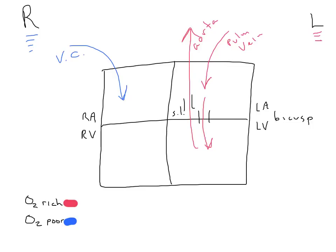The blood returning is oxygen depleted — all the body tissues have already used it. Just like on the left-hand side, blood is pumped from the atrium down into the ventricle. On the right-hand side, the AV valve — atrial ventricular valve — is called the tricuspid. A helpful memory trick: there's an R in tricuspid, so it goes on the right-hand side. As blood travels from the ventricle out of the heart, it passes through the pulmonary semilunar valve.